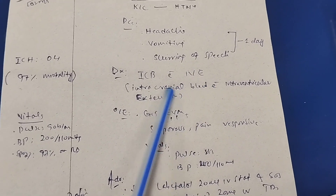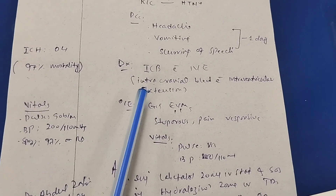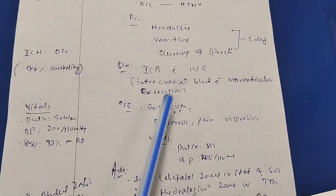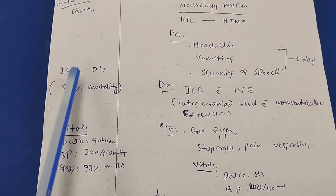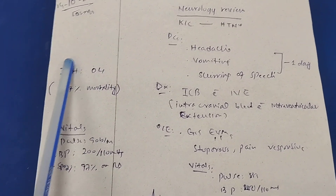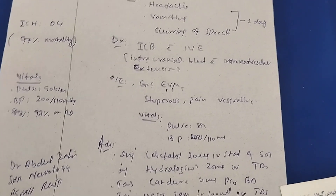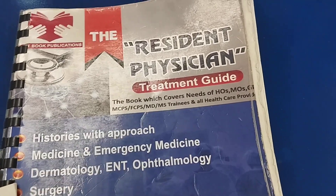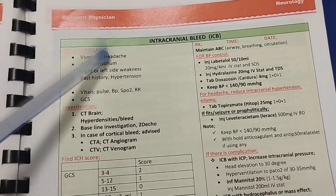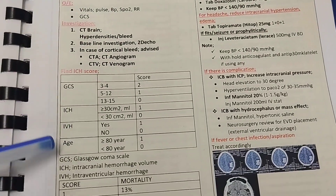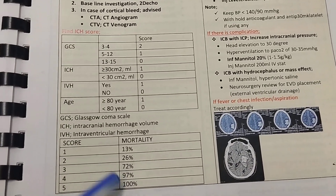The diagnosis is ICB with intraventricular extension — ICB with IVE — and the bleed was located at the right capsuloganglionic region with intraventricular extension. In ICB we calculate a score called the ICH score. For this patient, the ICH score was 4, and the mortality associated with a score of 4 is 97 percent.